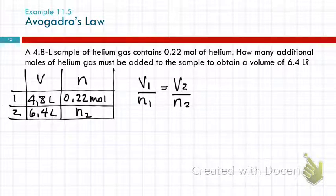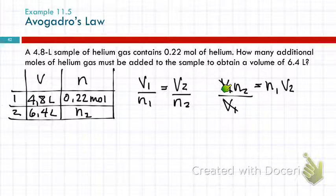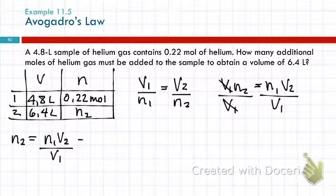V1 over n1 equals v2 over n2. So again, a law with fractions in it, clear the fractions by cross multiplying. V1 n2 equals n1 v2. And we're trying to solve for n2, so we're going to divide by v1 so that we can get n2 by itself here. And we'll divide the other side by v1. Rewrite the equation. N2 equals n1 v2 divided by v1. And then we'll plug the numbers in.